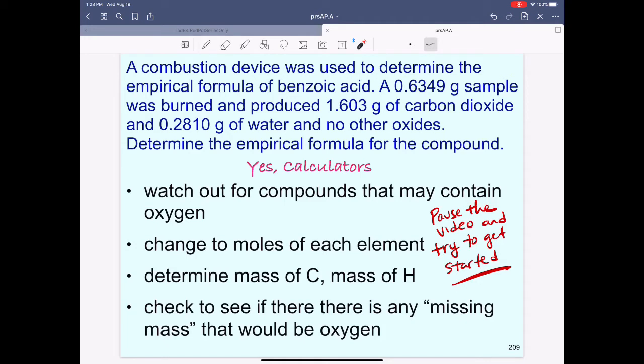So, let's say a combustion device was used to determine the empirical formula for some compound and the sample originally weighed 0.6349 grams and some carbon dioxide was produced, some water was produced, and there were no other oxides. This is telling us there was no nitrogen, no sulfur, no phosphorus.